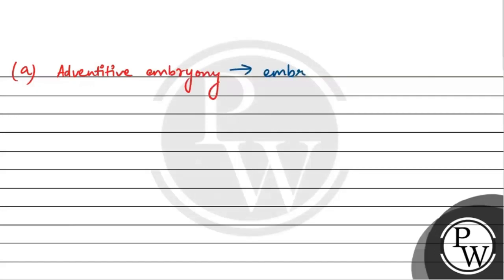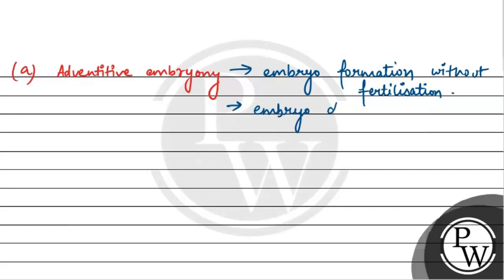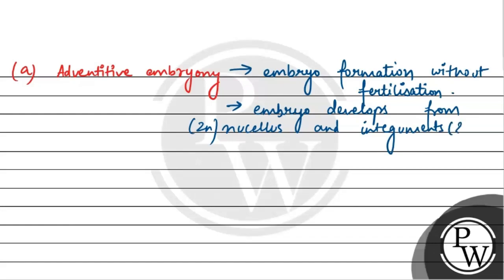Adventitive Embryony mein hota kya hai ki Embryo Formation toh hota hai lekin fertilization nahi hoti — embryo formation occurs without fertilization. Yeh hota kaise hai ki female gametophyte mein aur bhi cells present hote hain jo 2N ploidy rakhte hain. Toh embryo develop karta hai inhi cells se — embryo develops from cells like nucellus (2N ploidy) and integuments (2N ploidy). Inhi se embryo grow kar sakta hai, aur us process ko bolenge Adventitive Embryony.